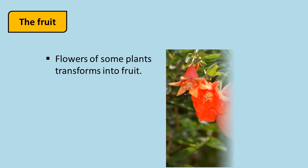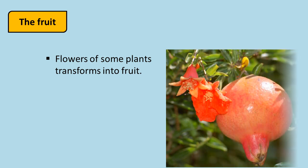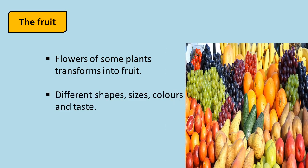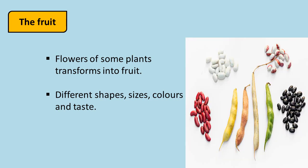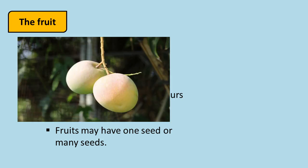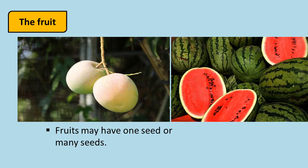Fruit. Flowers of some plants transform into fruit. Fruits have different shapes, sizes, colors, and tastes. All these fruits look very tempting, but students, all fruits are not edible. A fruit like datura cannot be eaten because it is toxic in nature. Do you know the pods of beans and peas are actually fruits? Fruit like mango has a single seed, while watermelon has a number of seeds in it.